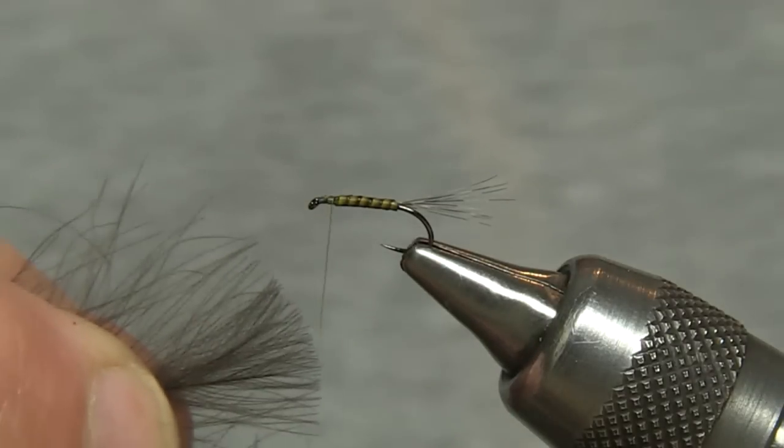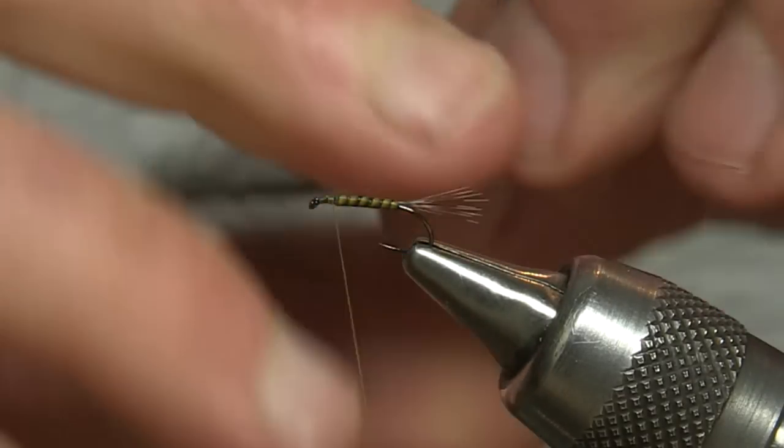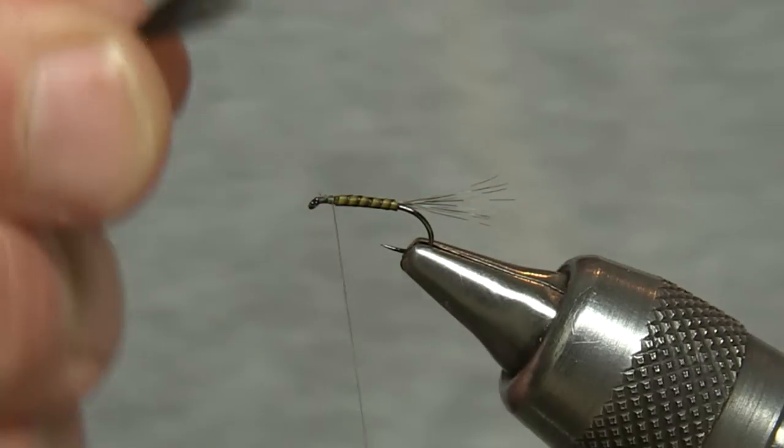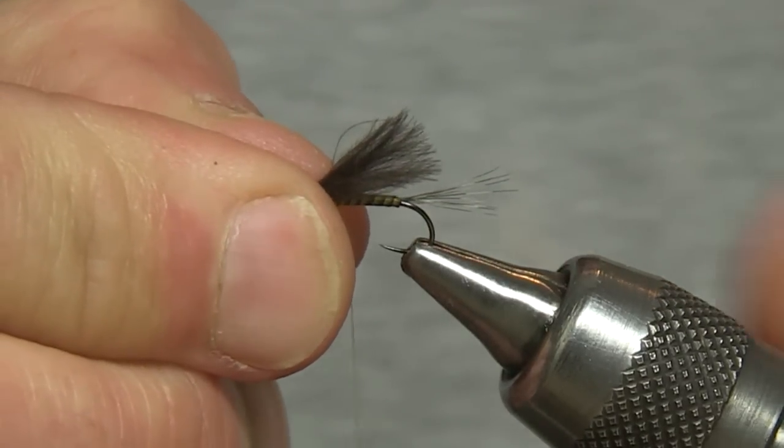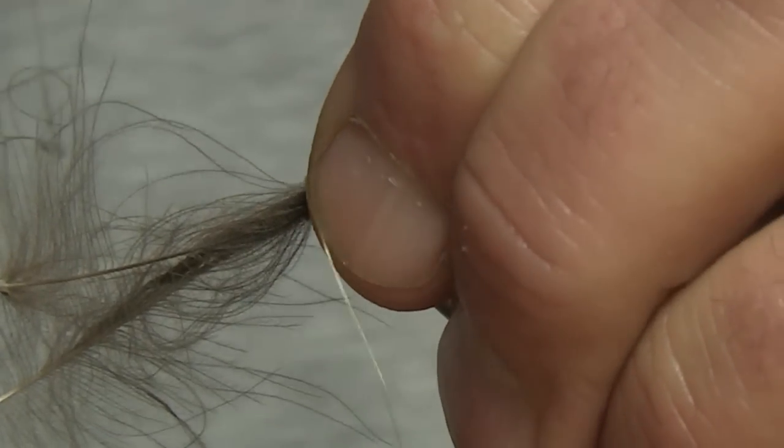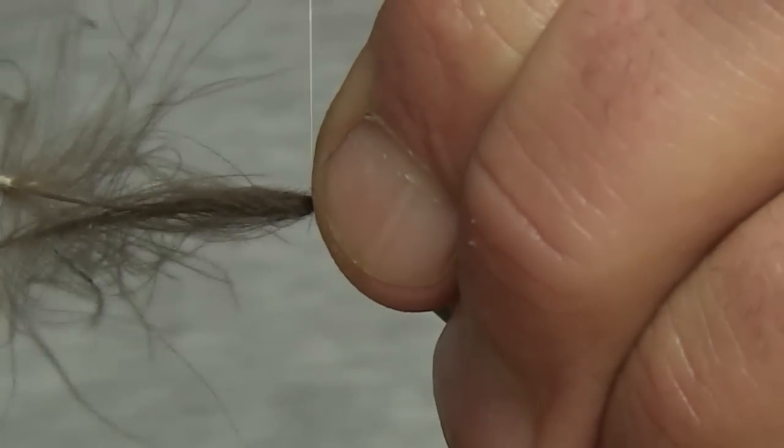Two natural grey CDC feathers with the tips married. Tie in sloping backwards, around about the same length again as the hook shank.